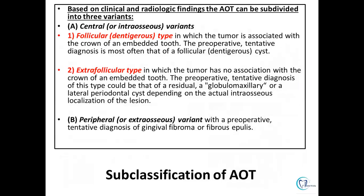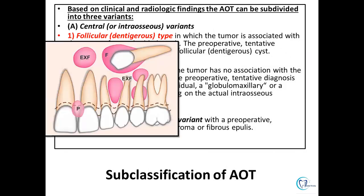Based on clinical and radiological findings, AOT can be subclassified into two broad categories: the central variant (intraosseous variety) and the peripheral or extraosseous variety. The central variety has two further subtypes: the follicular type, which resembles dentigerous cysts, and the extrafollicular type, which is not associated with an impacted tooth and resembles globulomaxillary and lateral periodontal cysts. Schematically, the follicular variety is found associated with an impacted tooth, while the extrafollicular variety is seen away from the tooth.